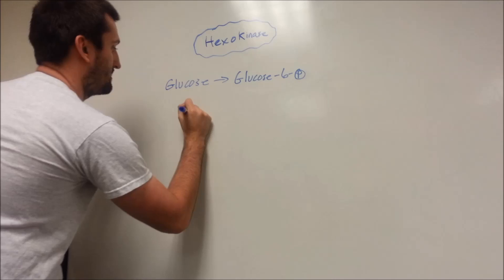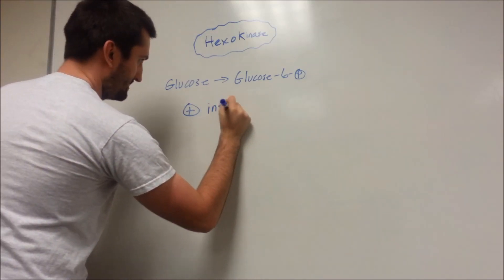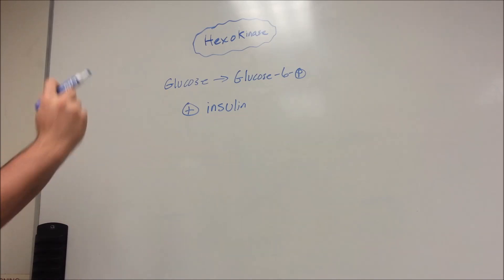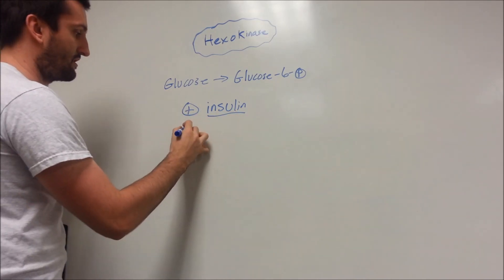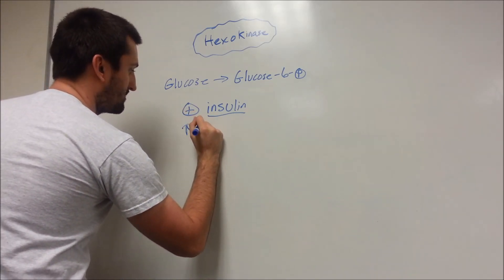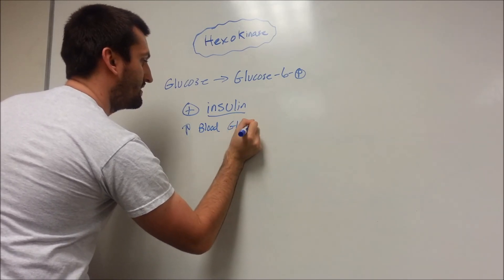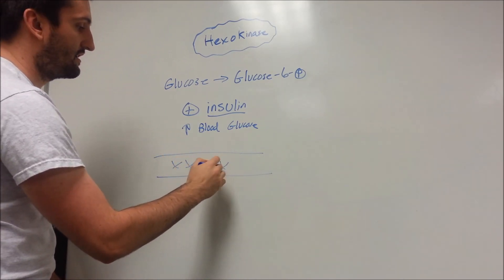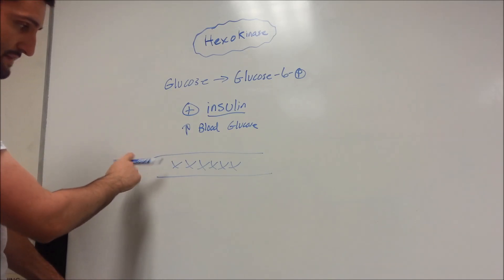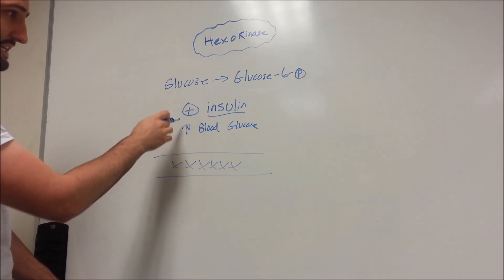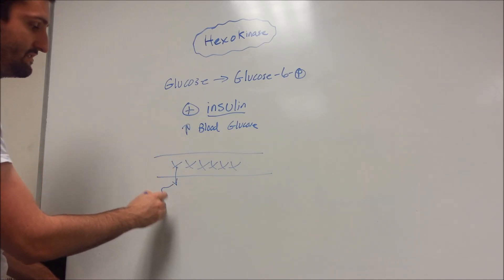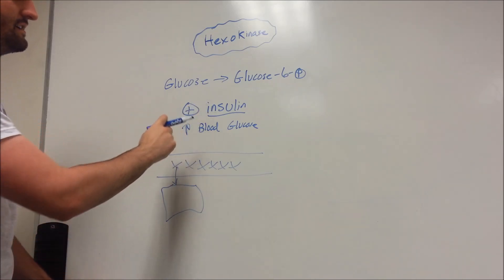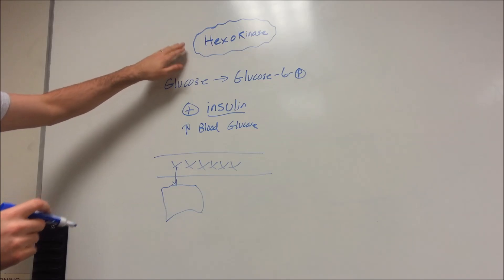How do you control hexokinase? Insulin is going to stimulate hexokinase. Your body releases insulin when you have high blood glucose. You have a whole bunch of insulin in your bloodstream, and your body wants to get rid of that glucose. High amounts of glucose in the bloodstream is bad, so you release insulin, it goes into the cells, and converts glucose to glucose-6-phosphate, trapping that glucose in the cell.